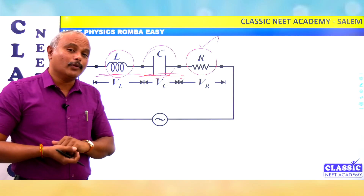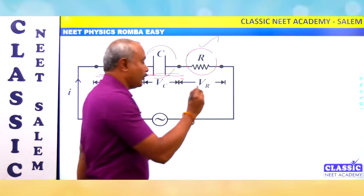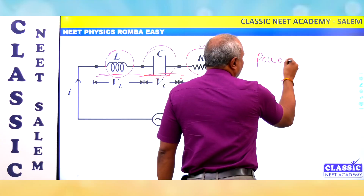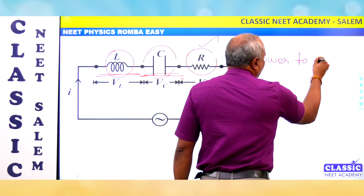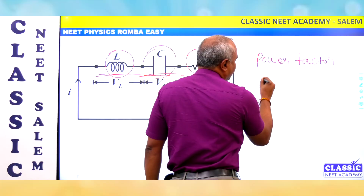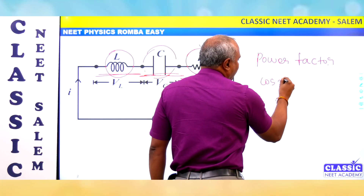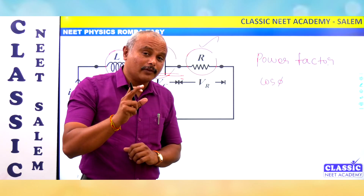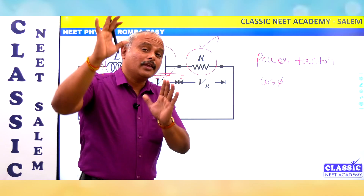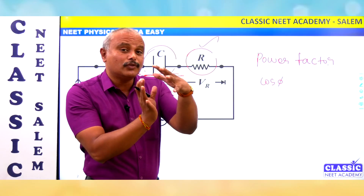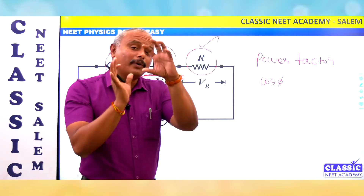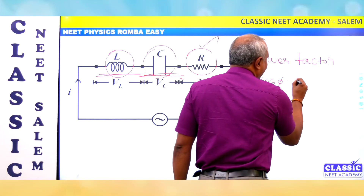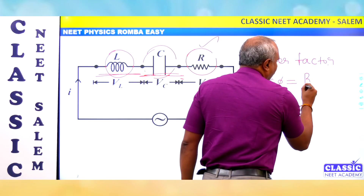Power factor is very useful. Power factor — that is cos φ — tells us how much power is consumed. It is the ratio between power consumption divided by apparent power. Power factor is equal to R by Z, from the impedance triangle.